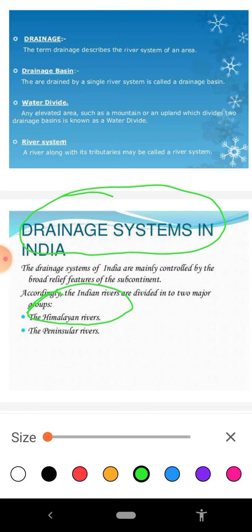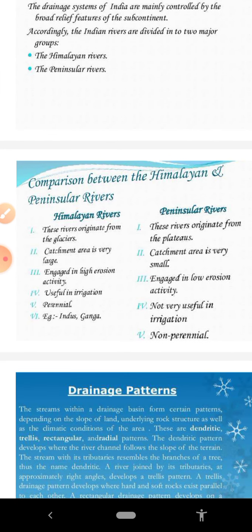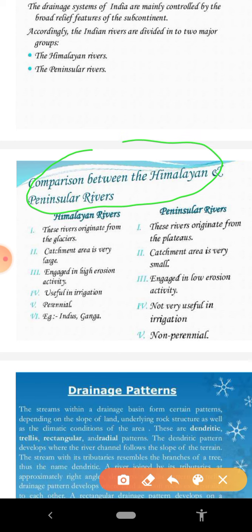Now let us discuss some important differences between the Himalayan river system and the Peninsular river system, as this is a very important question. The first difference: Himalayan rivers originate from the Himalayas, whereas Peninsular rivers originate from the hills of the Peninsula.